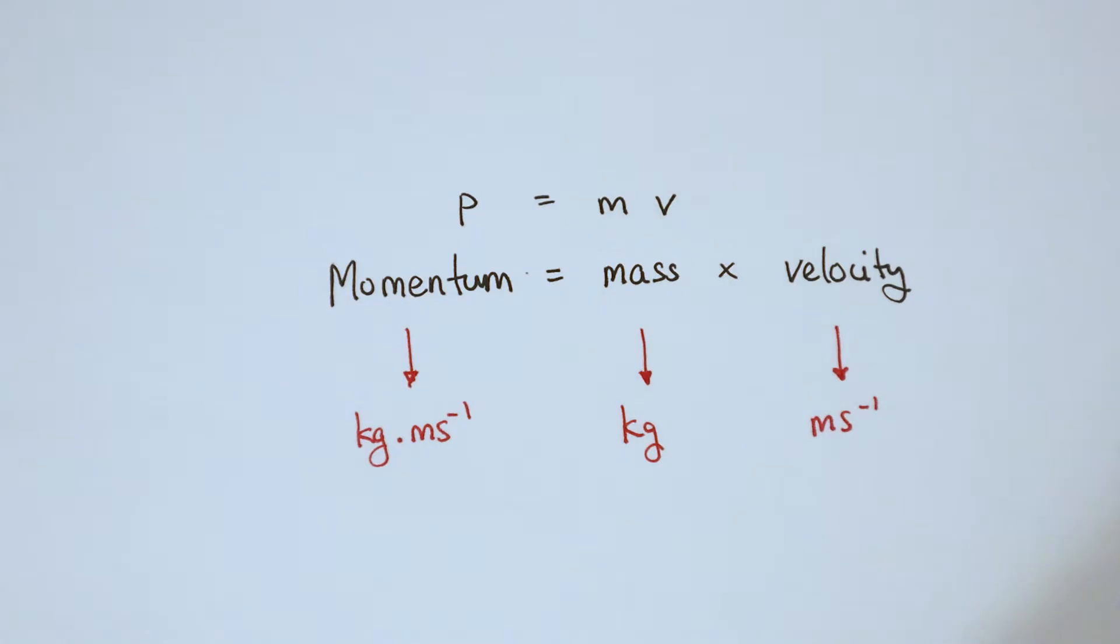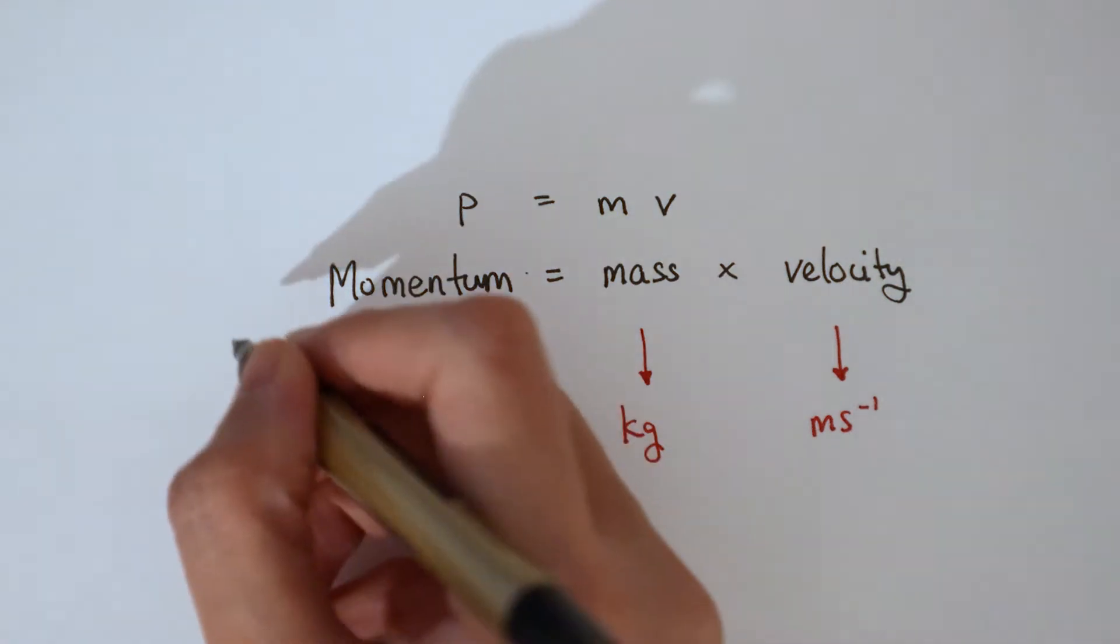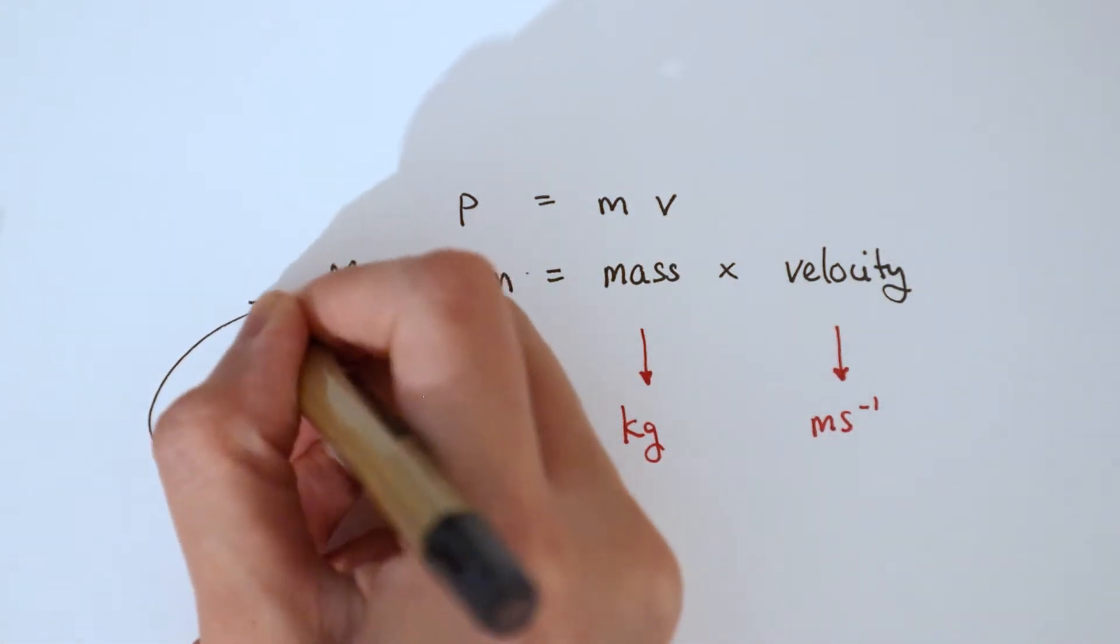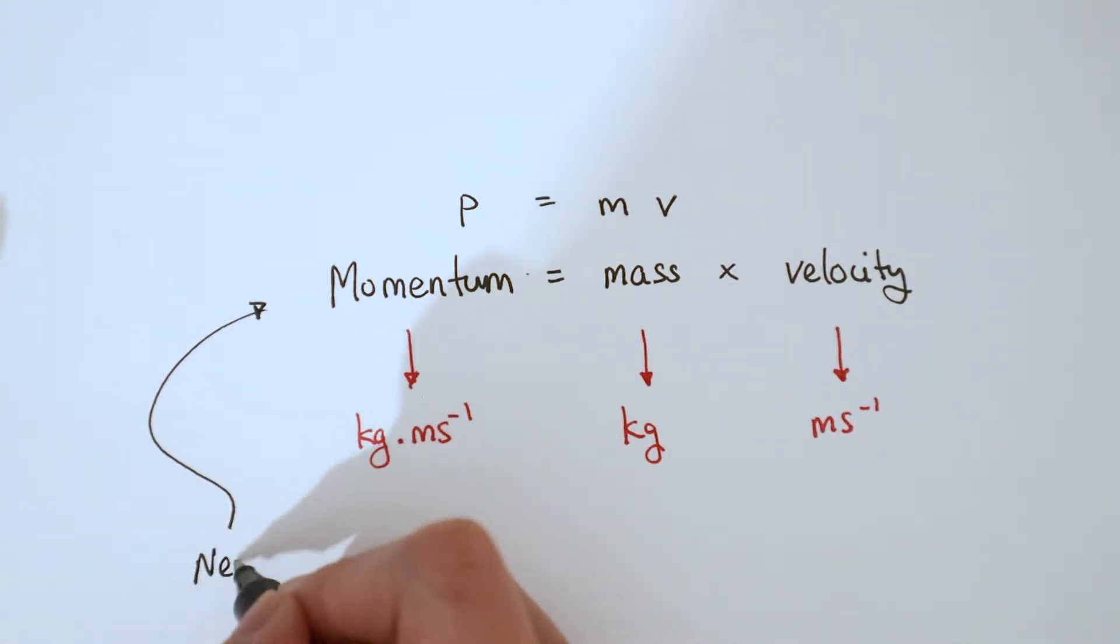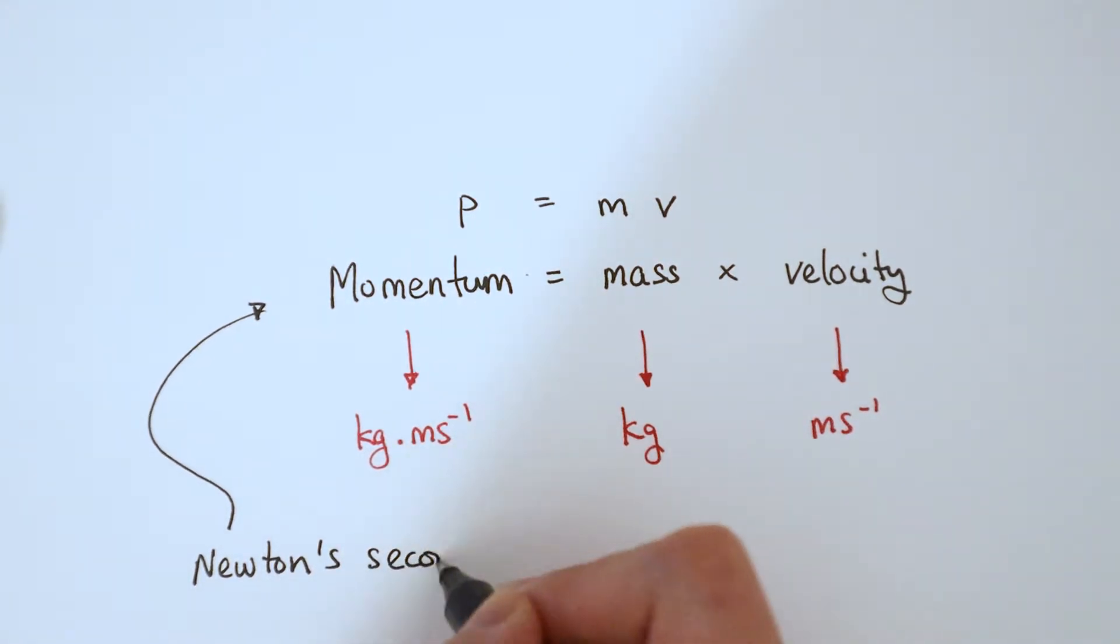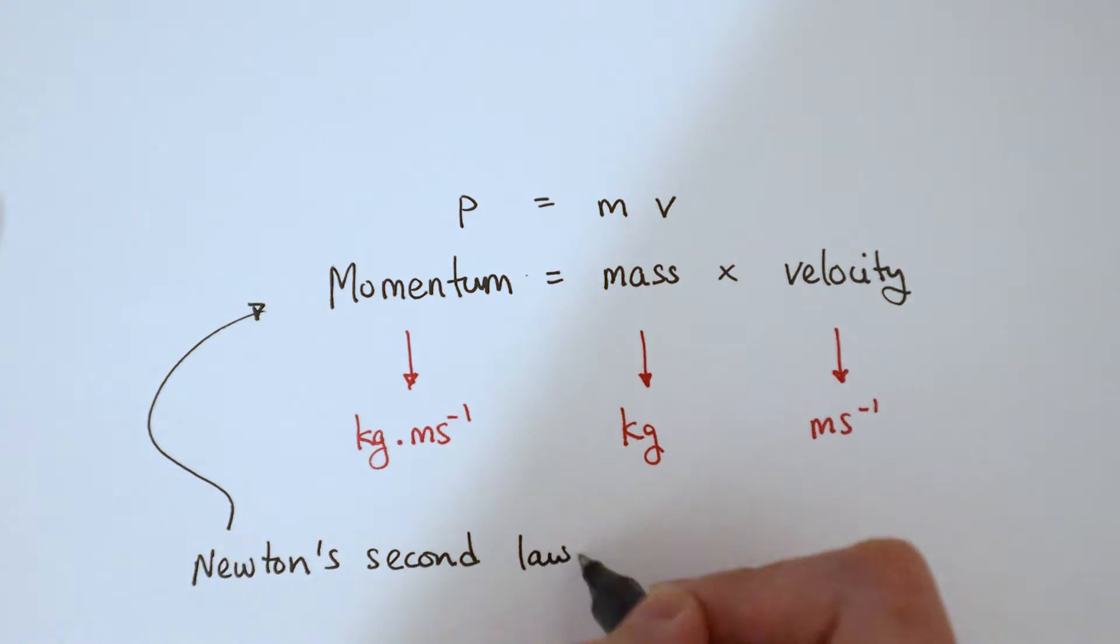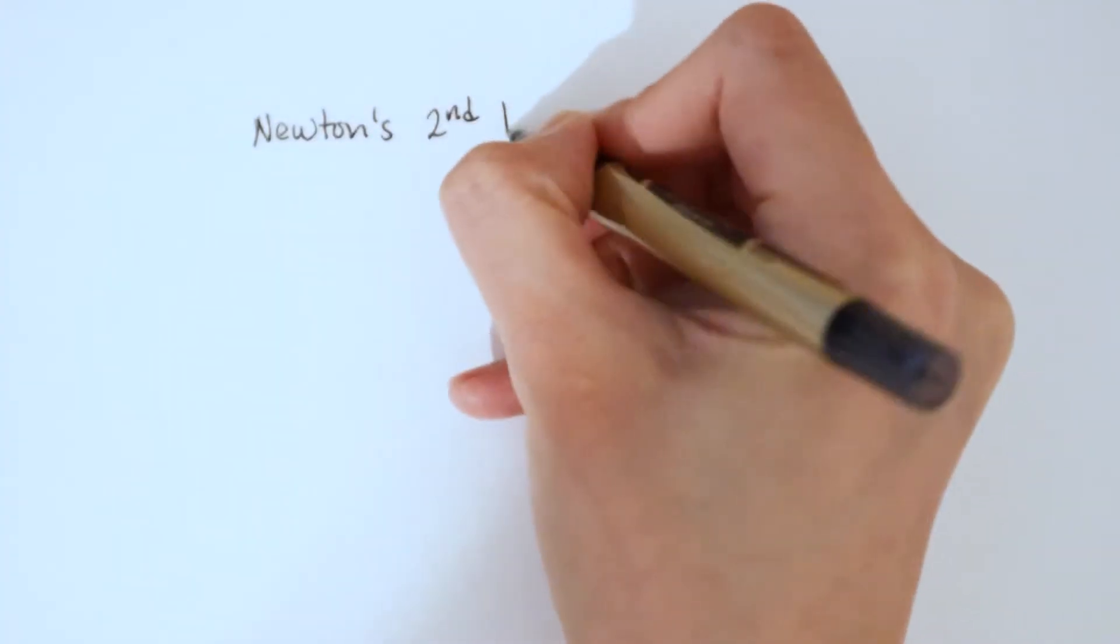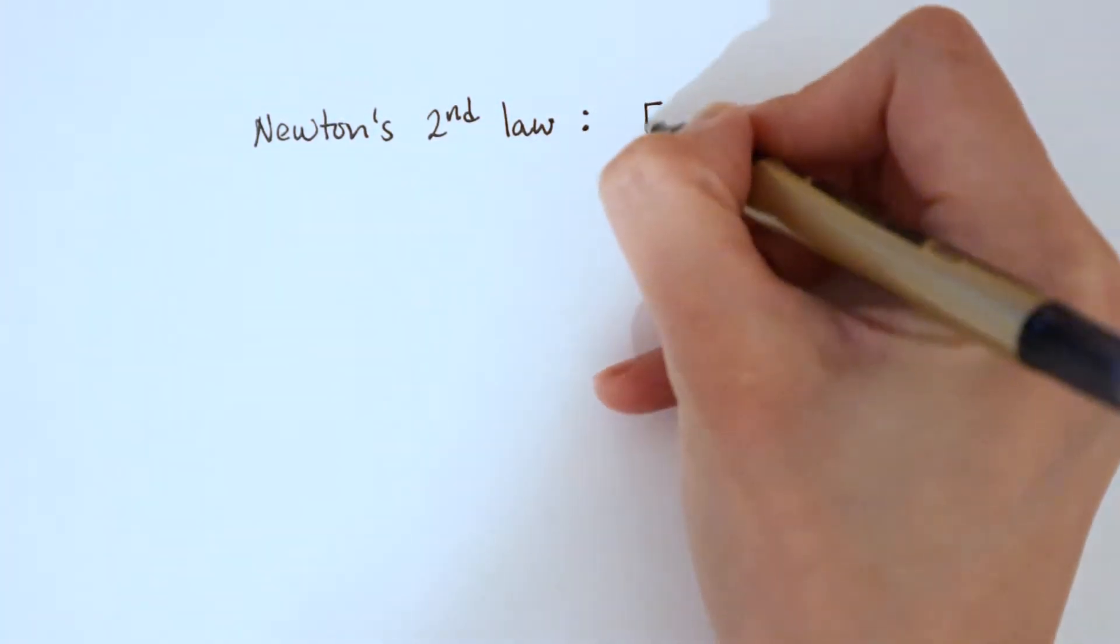And also from previous years, you would remember that Newton's second law is F equals ma. So that's force is mass times acceleration. But did you know that the idea of momentum could be used in Newton's second law? Newton's second law, we have F equals ma. Force is mass times acceleration.